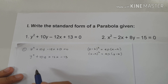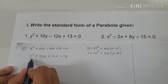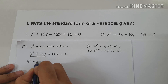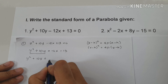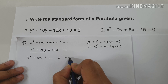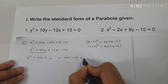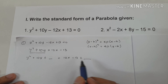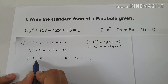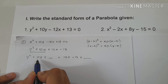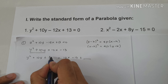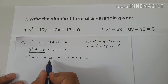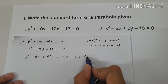The next step is to make this expression into a perfect square trinomial. So we have y squared plus 10y plus blank equals 12x minus 13 plus blank. Whenever we add on the left side, we add on the other side too. We divide the middle term's coefficient by 2: 10 divided by 2 is 5, and 5 squared is 25. So we add 25 to complete the trinomial, and also add 25 to the other side.